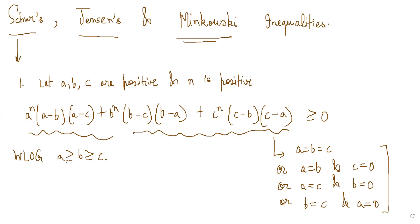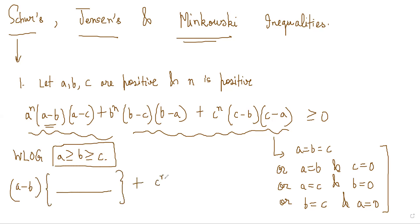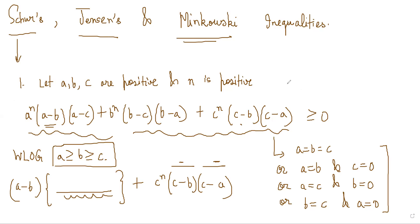The symbols don't matter, so you can assume any order. Once you assume that, you can easily prove this inequality by taking (a − b) as a common factor. You'll get something here, and the third term involves c^n(c − b)(c − a). Now this is positive because both factors are negative. Similarly, you can prove the whole expression is positive. That is Schur's inequality.